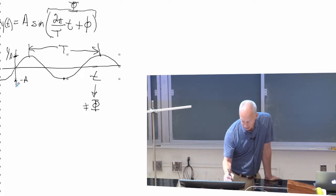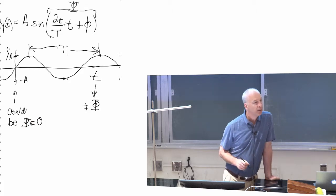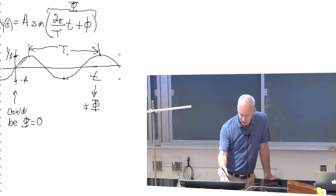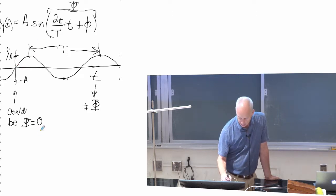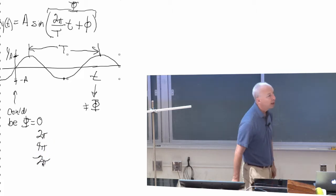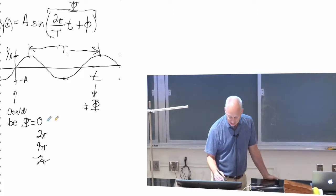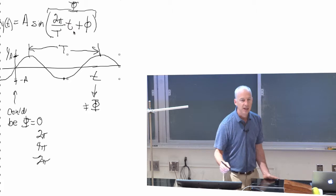This could be capital phi equals zero. The problem is there are other times, there are other values of capital phi, where you're at zero and headed upward. Like two pi, and four pi, minus two pi, minus four pi. There are all sorts of possible values for capital phi, for all of the stuff in there.